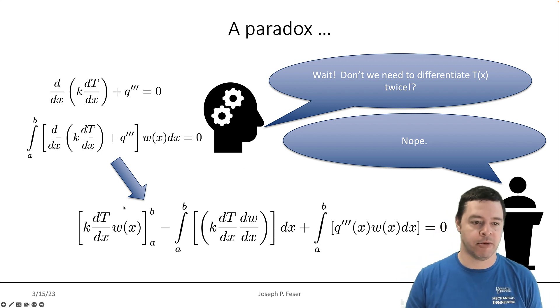So actually, because I'm able to do integration by parts on this, I don't actually need to be able to take two derivatives of either the temperature approximation or the test function. I just have to be able to take first order derivatives. And so that's really what allows us to use a linear approximation to something that actually in real life has curvature. So that's part of the trick. It's a pretty cool trick.